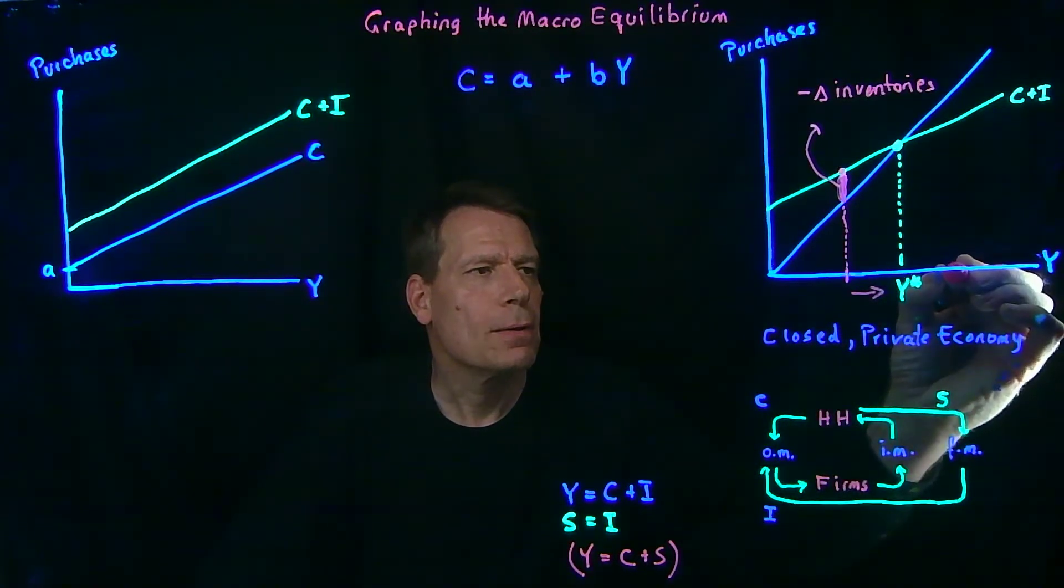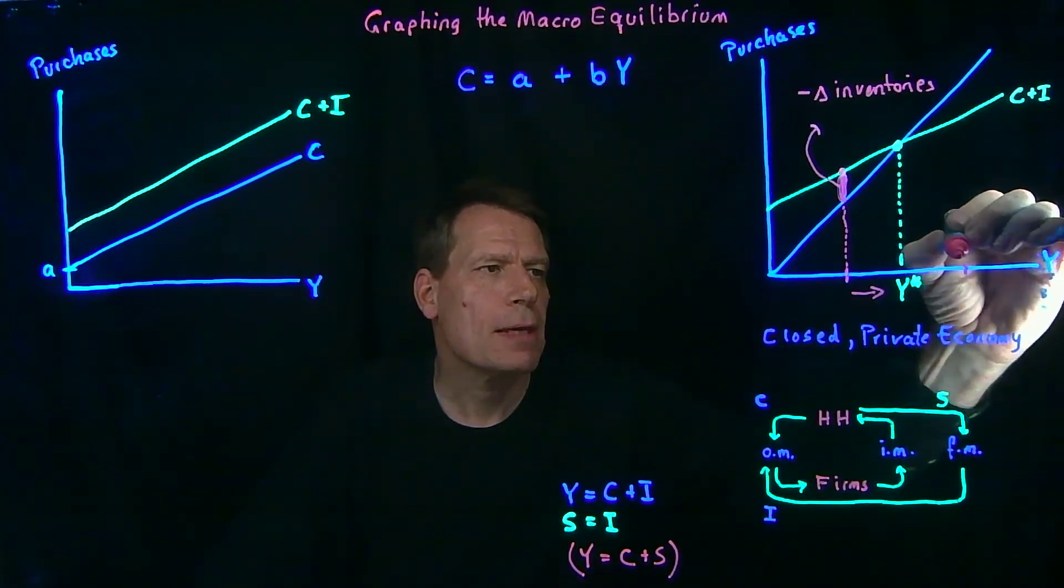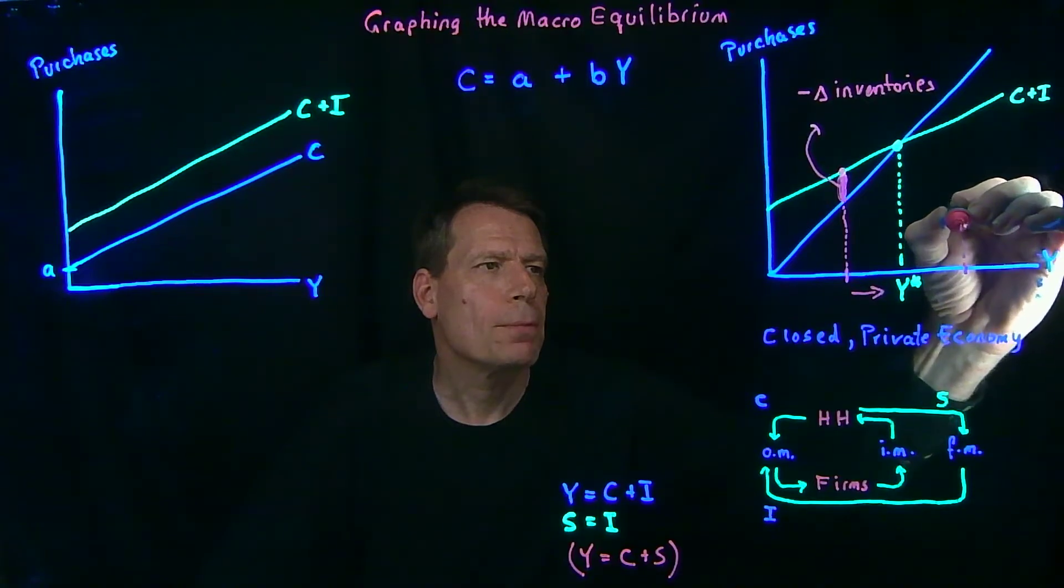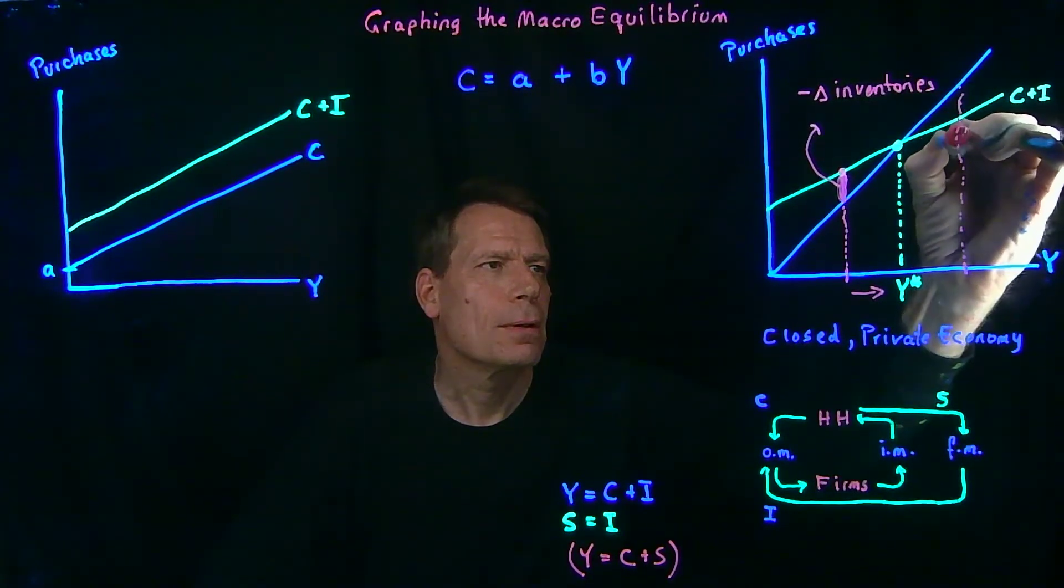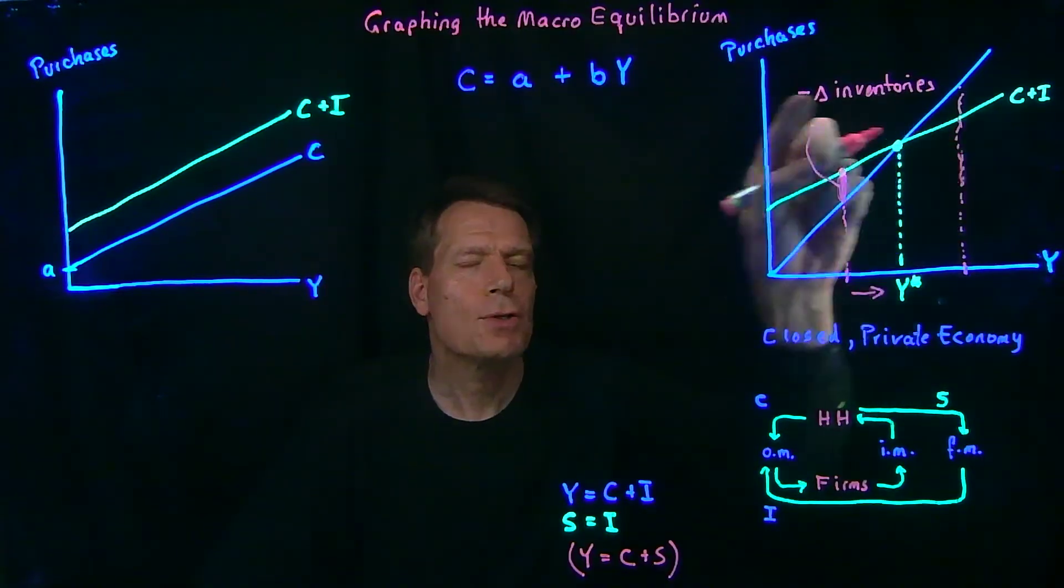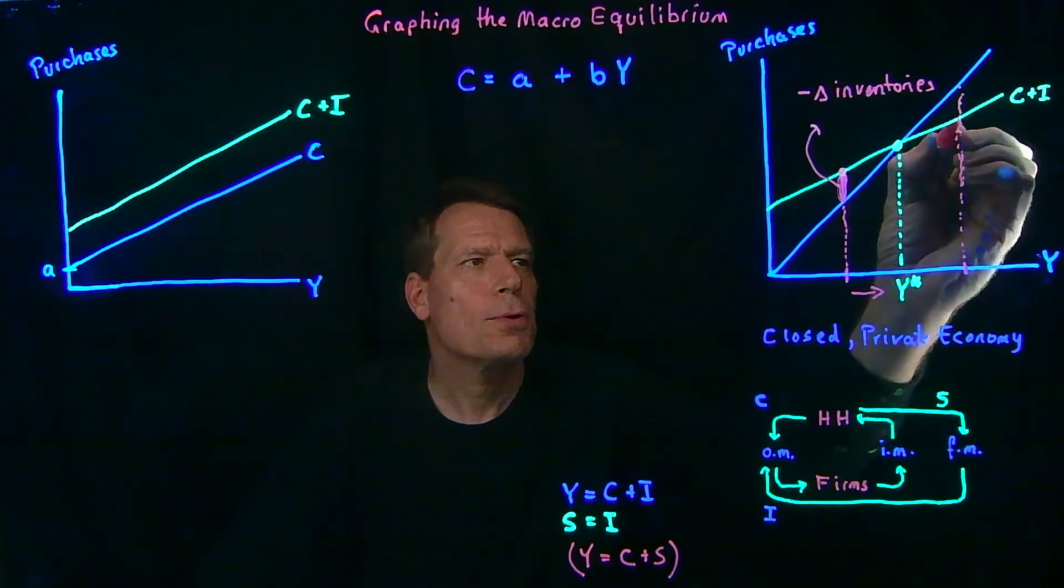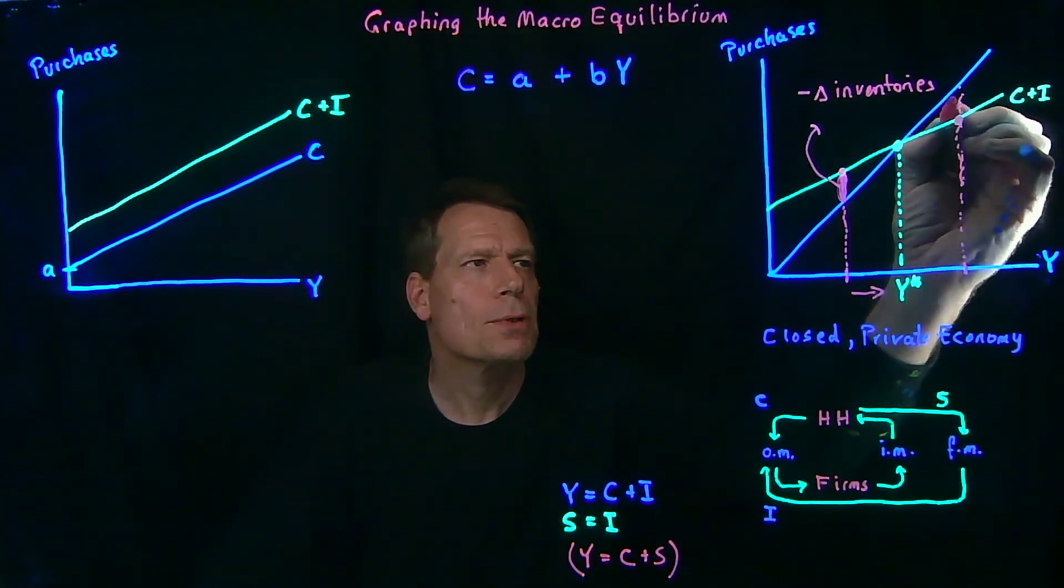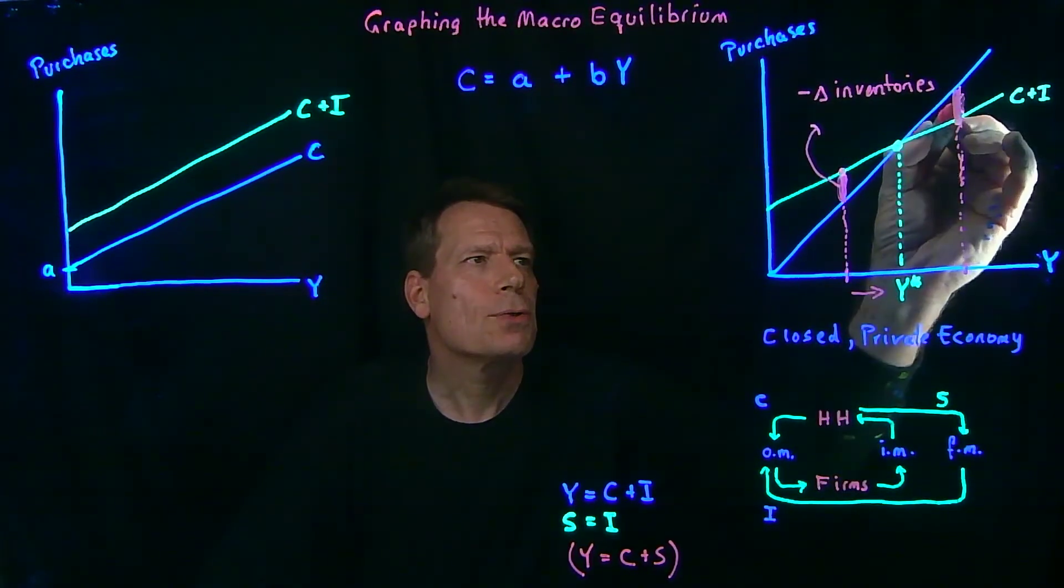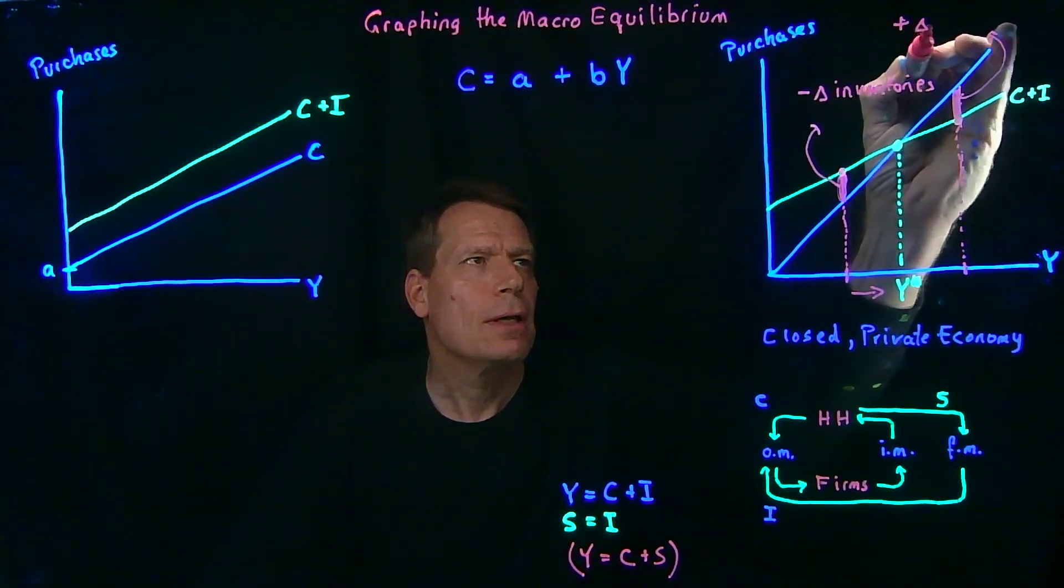If we started with a GDP above the equilibrium, we could do the same thing. We could go up to the 45 degree line and that would tell us on the vertical axis how much we're producing. But consumers and businesses are only purchasing this much. So now businesses and consumers are purchasing less than what's being produced. So up here, we have a positive change in inventories.